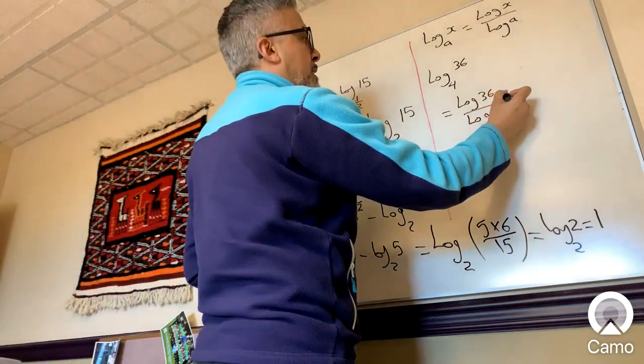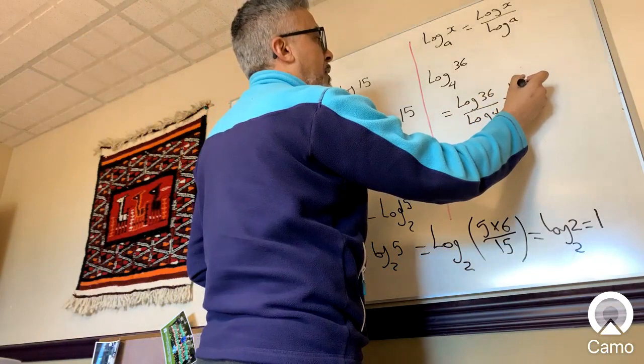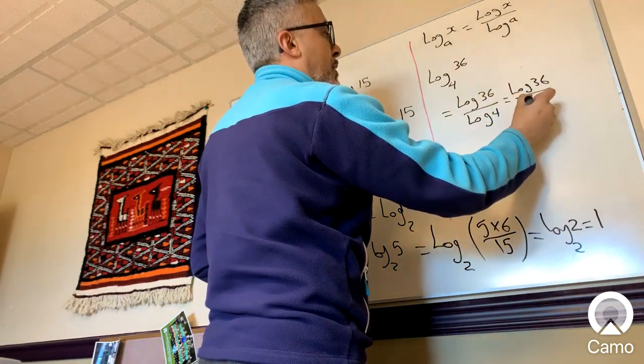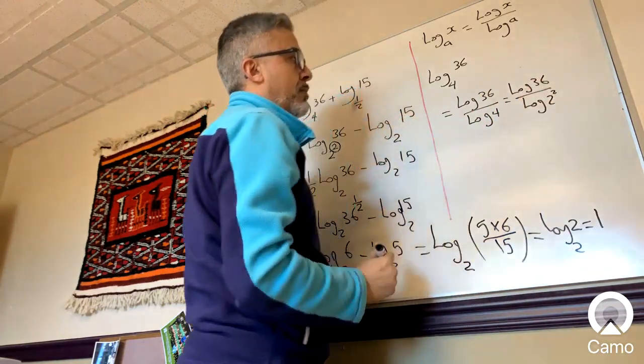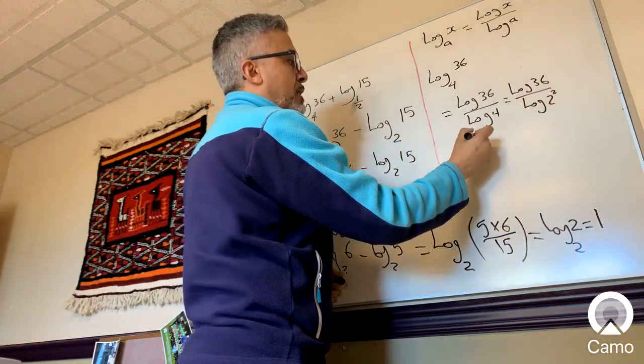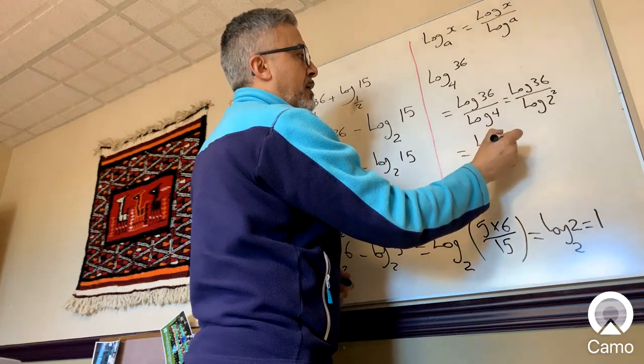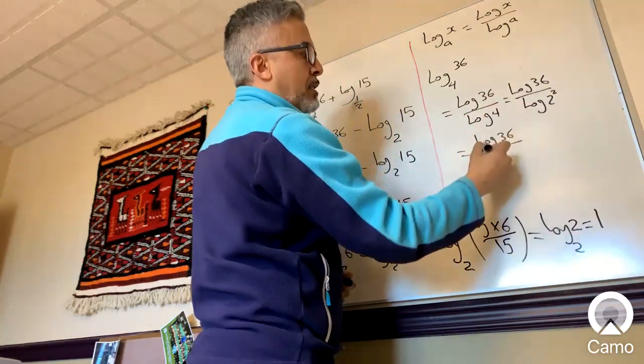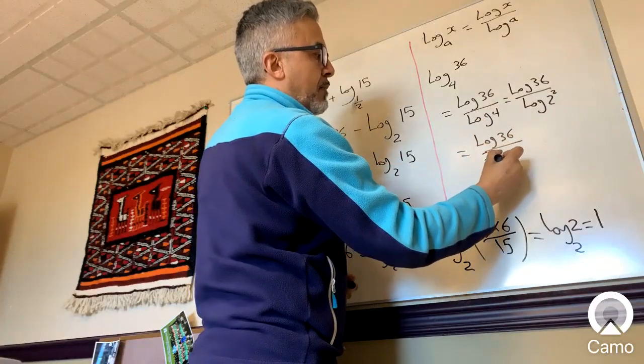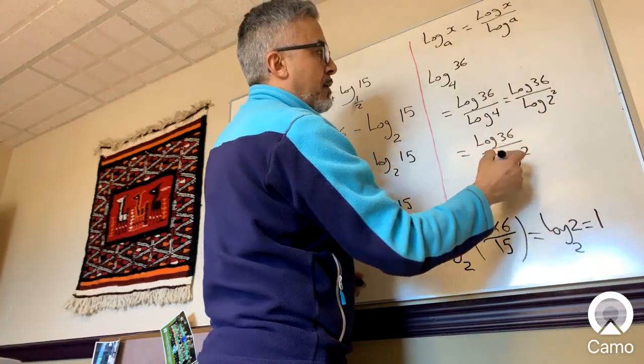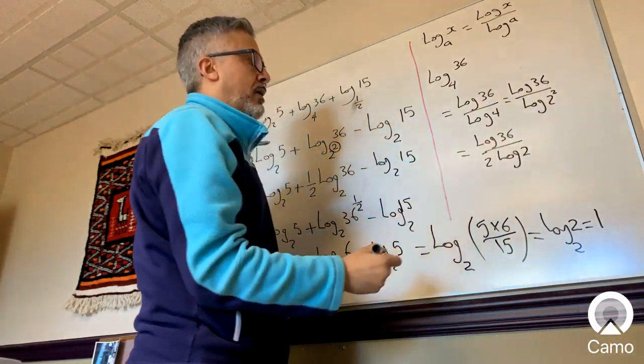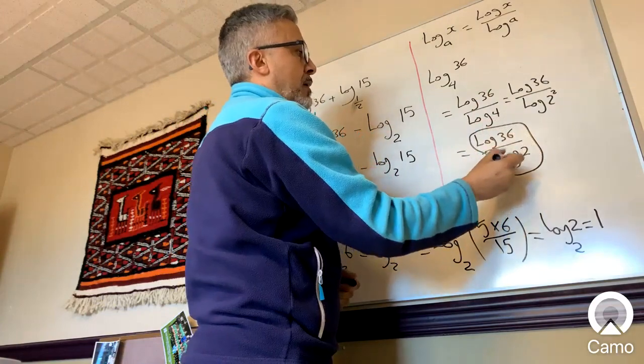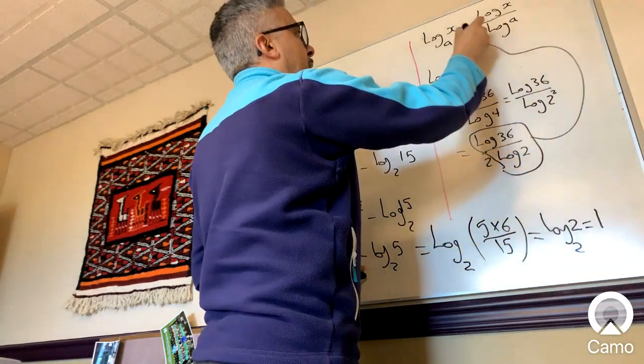Now I'm going to change this into log 36 over log 2 to the power of 2, which allows me now to change this to log 36 over, I could bring the exponent down in front of the log. So that 2, I just brought it to the front.